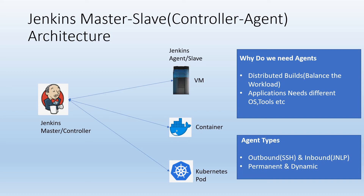The second type of classification is permanent and dynamic. In the permanent type of agents, we create the agent and keep it continuously running — even after a build completes, we keep the agent running for the next builds and do not destroy it. In the dynamic type of agents, whenever a build happens the agent is created dynamically, the job executes, and once the job completes the agent is destroyed. These dynamic agents are typically done using Docker containers or Kubernetes pods. We can also create virtual VMs using AWS, GCP, or Azure and once the build completes, the VM will be destroyed.